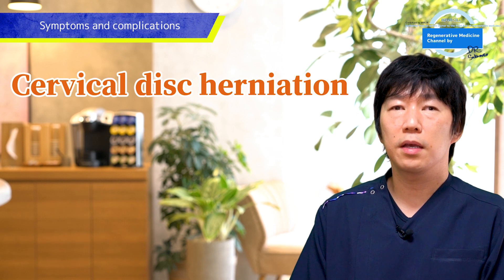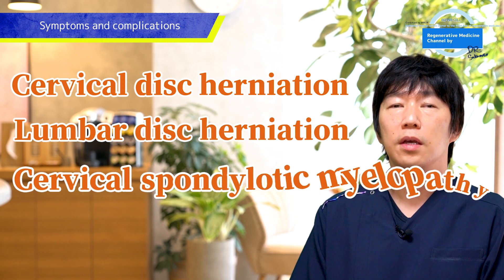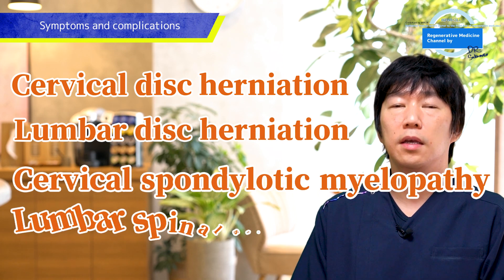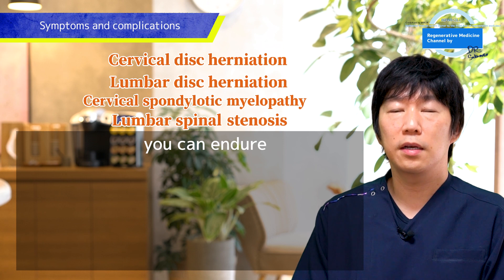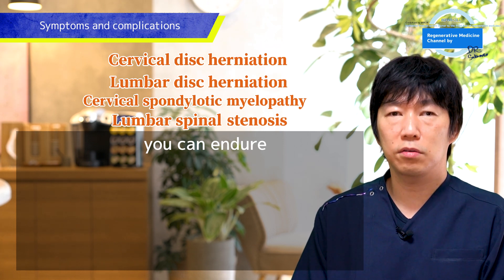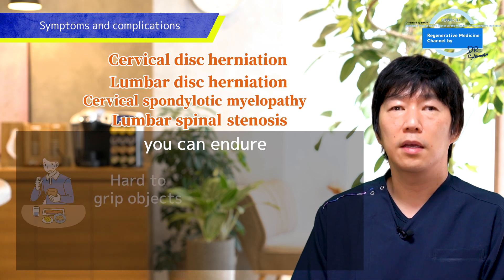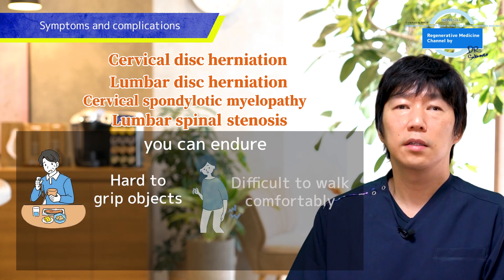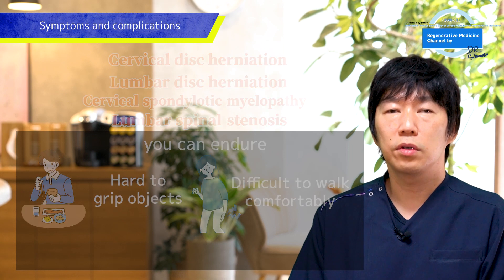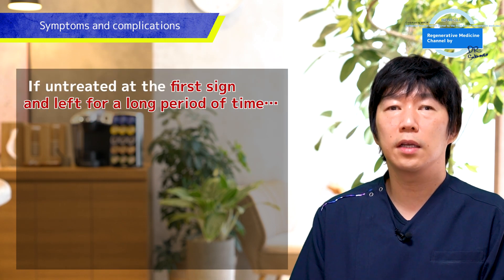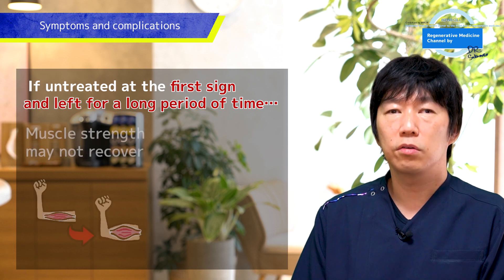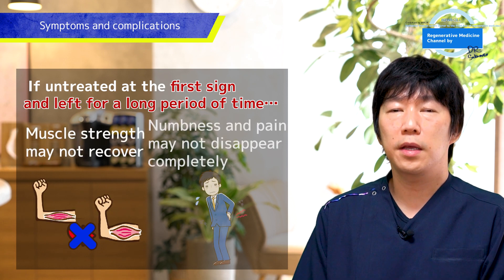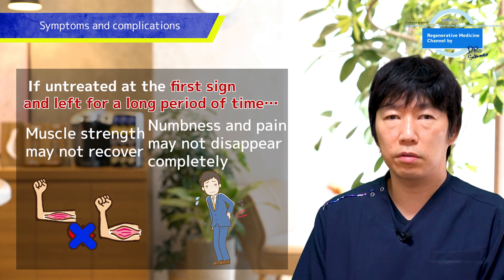Cervical disc herniation, lumbar disc herniation, cervical spondylotic myelopathy, and lumbar spinal stenosis start from moderate pain and numbness that you can endure in the beginning, but worsens if you leave it — the pain and numbness get stronger and the muscles weaken, making it harder to grip objects and to walk comfortably. If untreated at the first sign of pain and numbness and left for a long period of time, even if it is treated with an operation, it likely leads to further complications like muscle strength not recovering well and numbness and pain not disappearing completely.